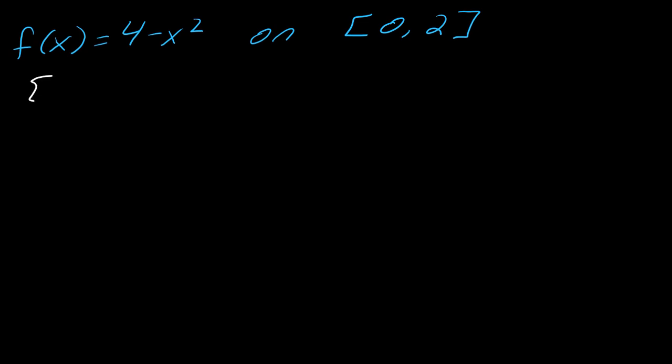Okay, so for our sum, I've got this going from k equals 1 to n of f of 0 plus k times 2 minus 0 divided by n, all of that times 2 minus 0, all of that divided by n. Okay, so this is where I'm starting.